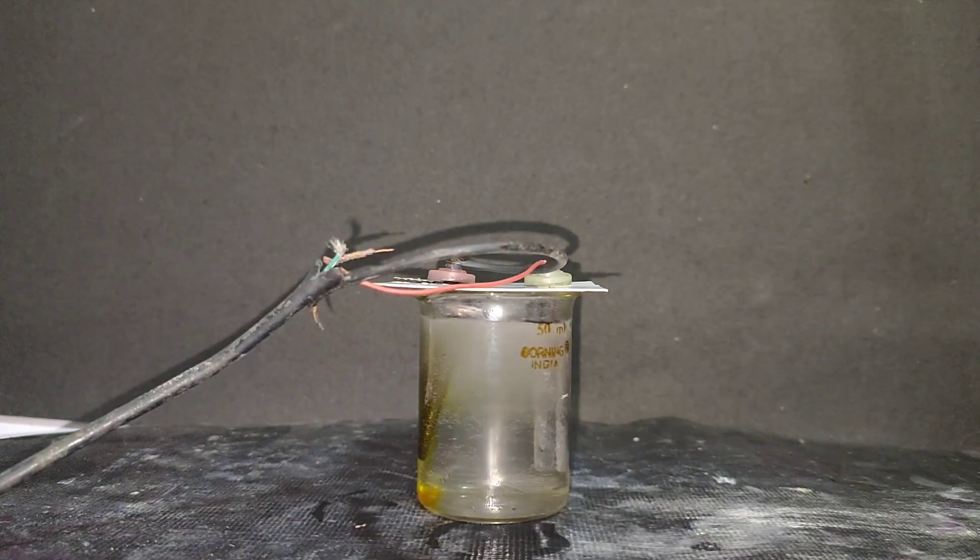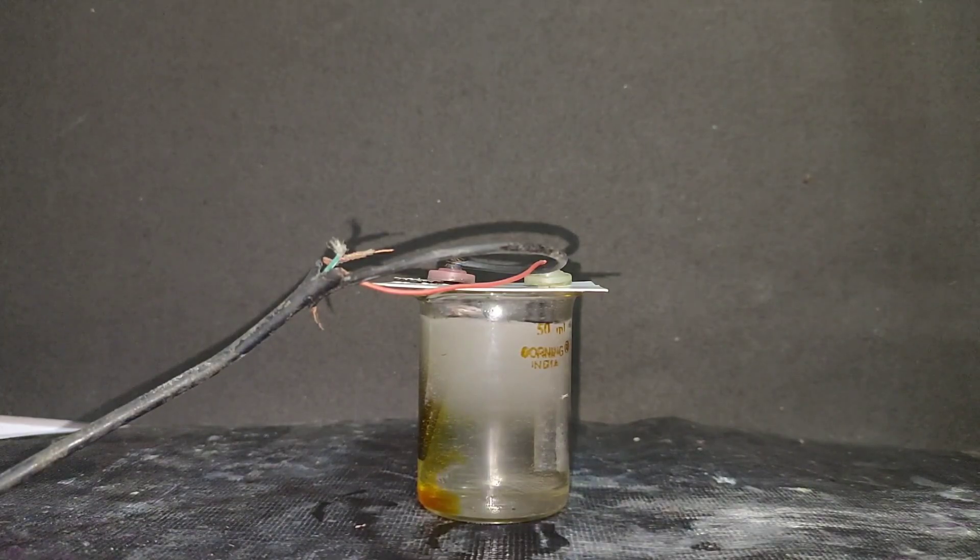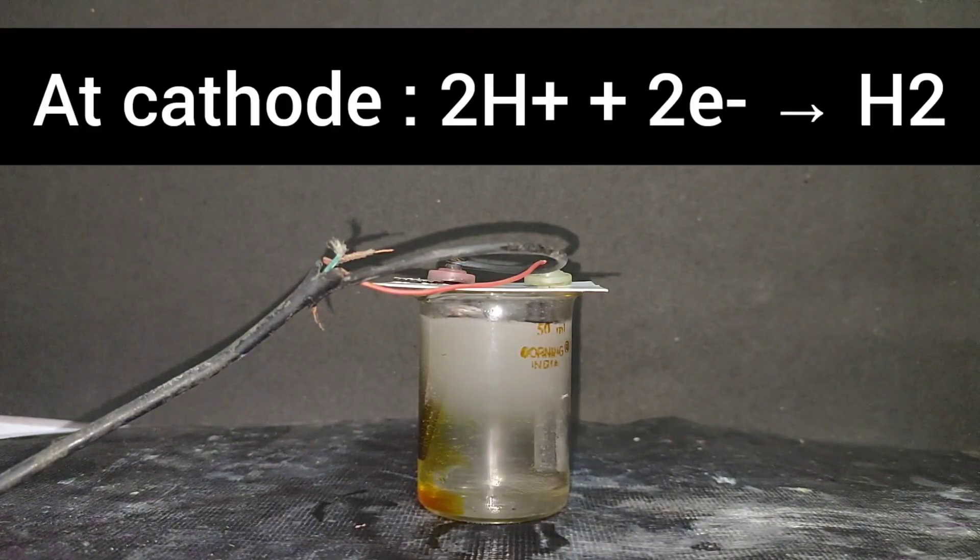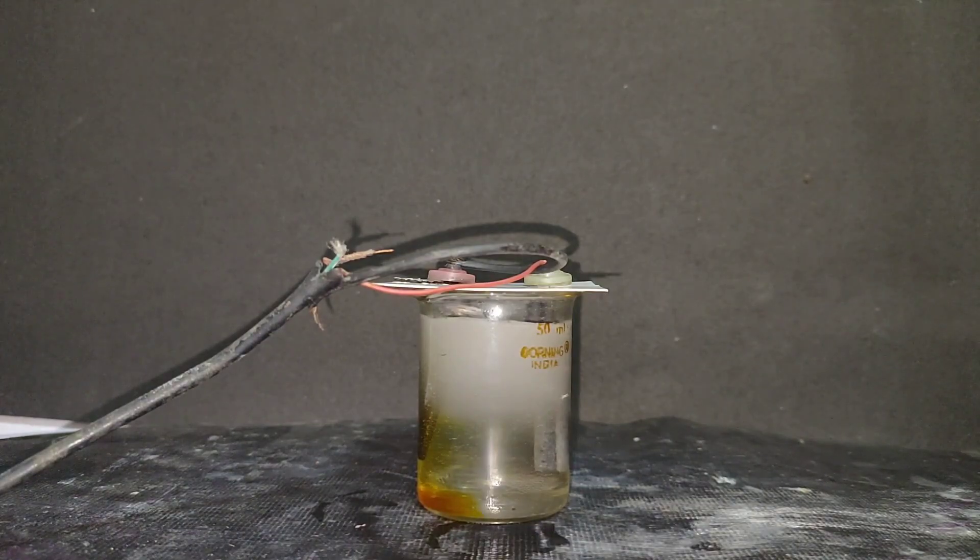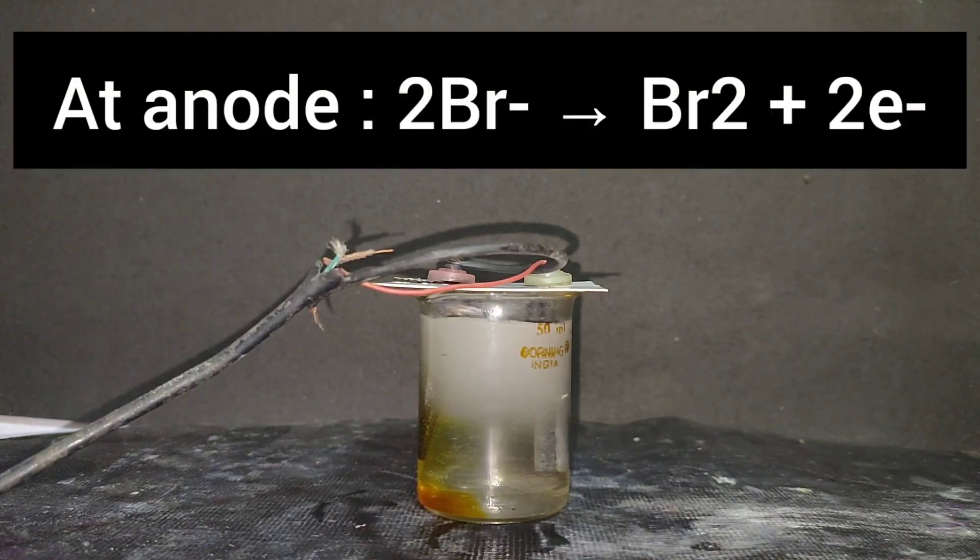What is happening here is there are four kinds of ions in this solution: potassium ions, bromide ions, hydroxide ions and H plus ions. So due to low reduction potential of H plus ions, the H plus ions are getting reduced on the cathode and on the anode.